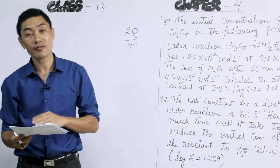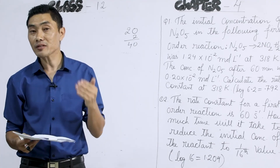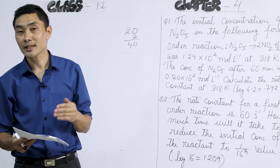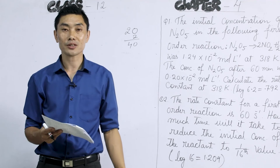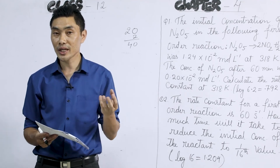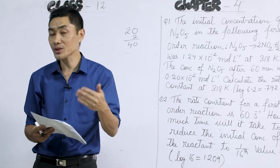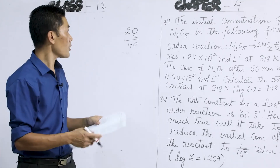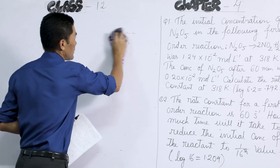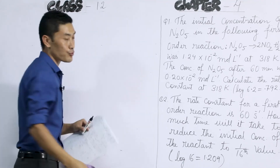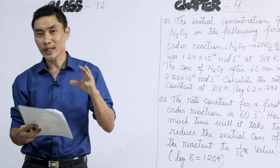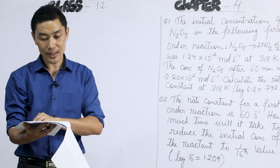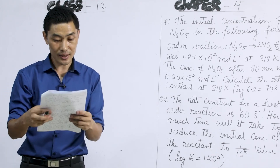So with every 10 degree rise in temperature, the rate of the reaction becomes almost doubled or sometimes even tripled. Temperature is one very important factor that affects the rate of a reaction. Another factor is the presence of a catalyst. A catalyst is a substance that increases the rate of reaction without itself undergoing any change during the course of the reaction.